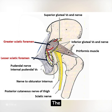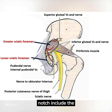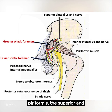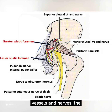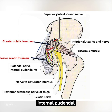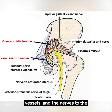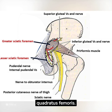The contents of the greater sciatic notch include the piriformis, the superior and inferior gluteal vessels and nerves, the sciatic and posterior femoral cutaneous nerves, the internal pudendal vessels, and the nerves to the Obturator internus and Quadratus femoris.